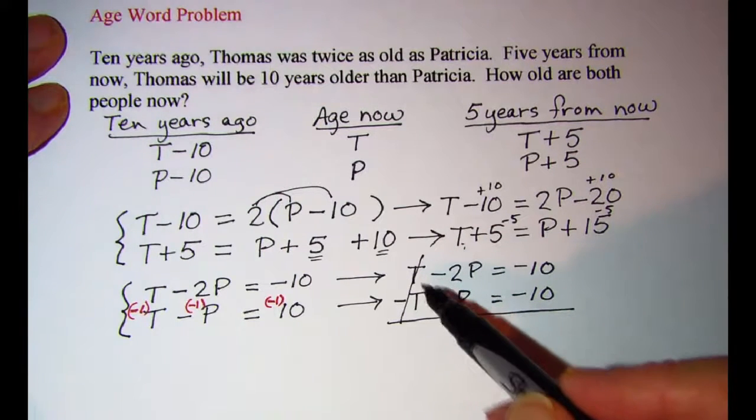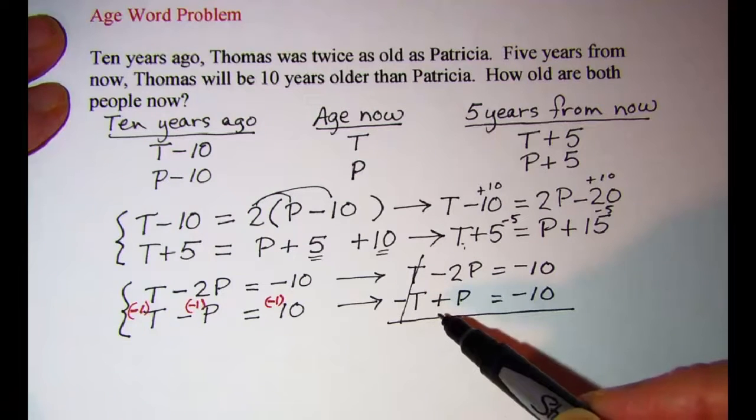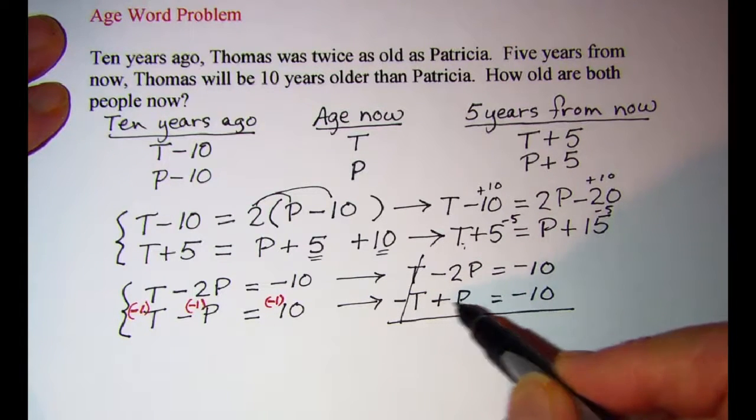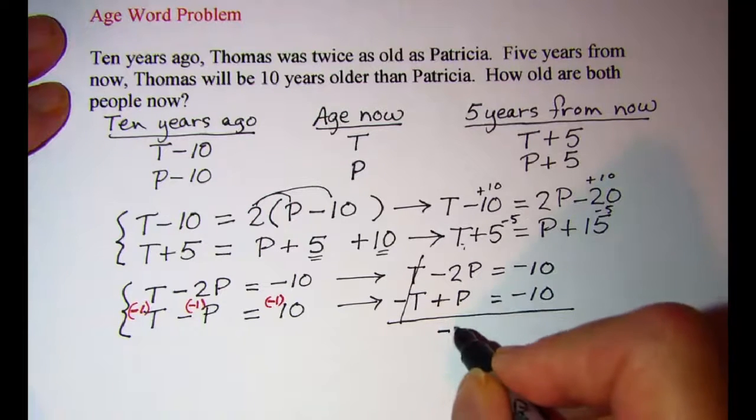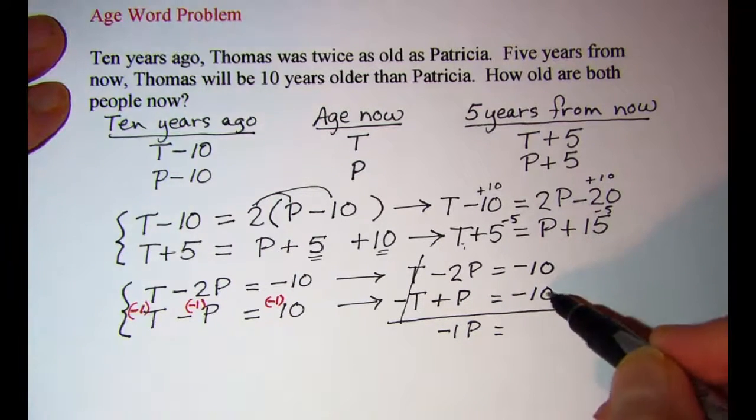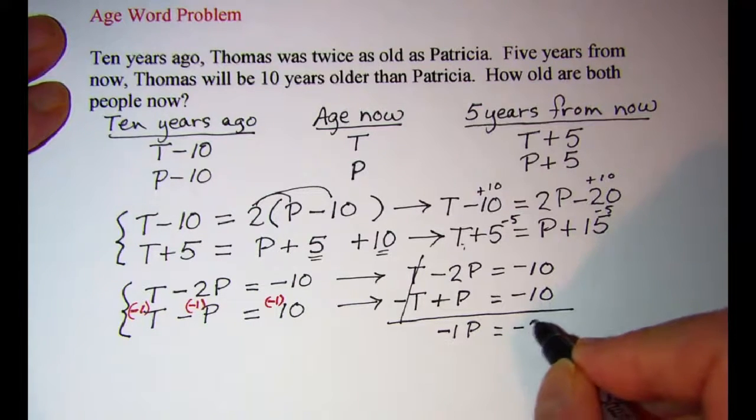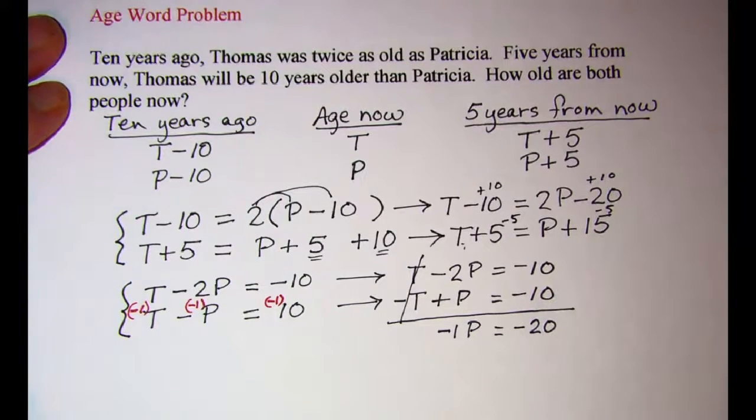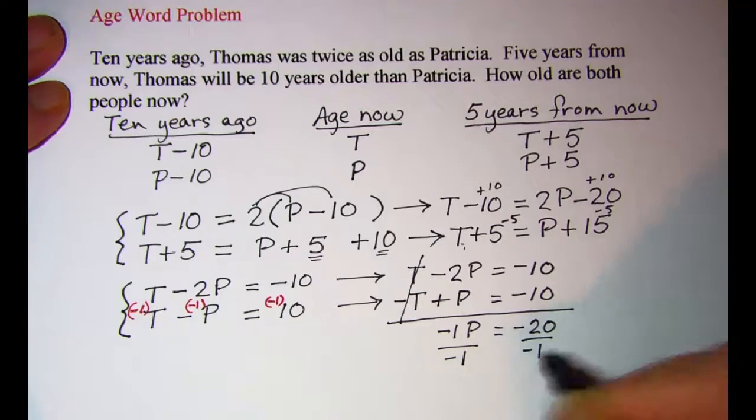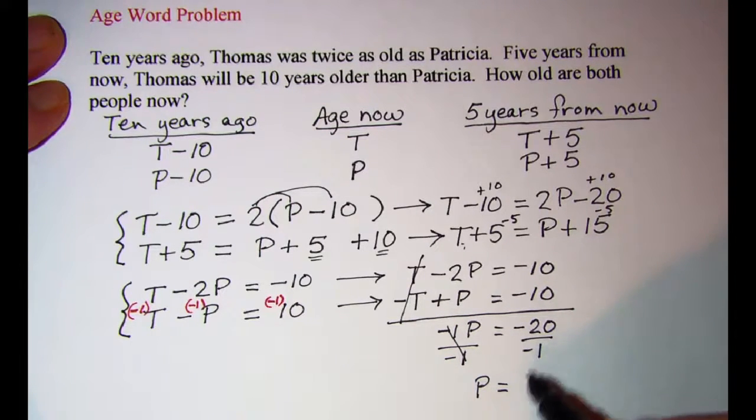Now these two equations are ready to be added together so that I can eliminate the T's. Whenever you have positive and a negative same variable, those go away. So negative 2P and a positive one P is negative one P. Negative ten and negative ten is negative twenty. We divide both sides by negative one. And P is equal to twenty.